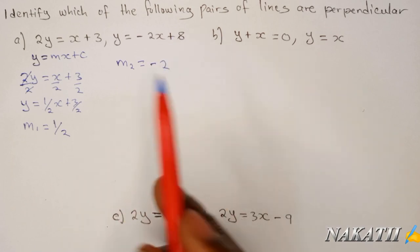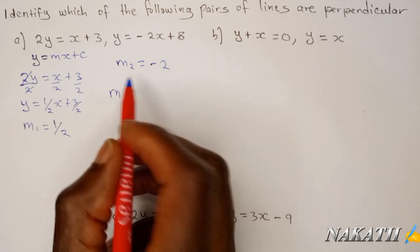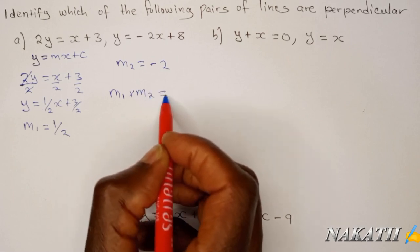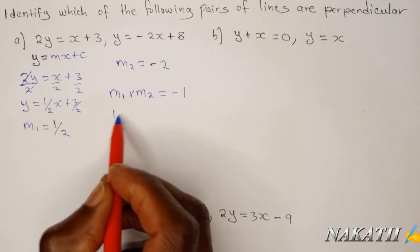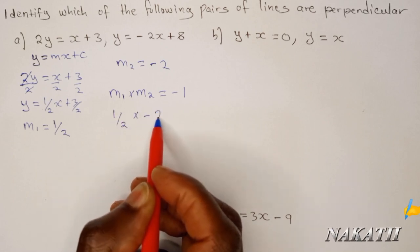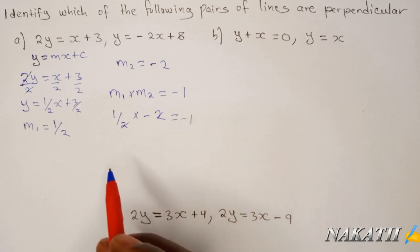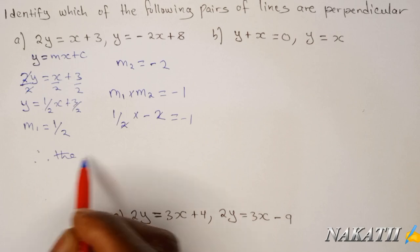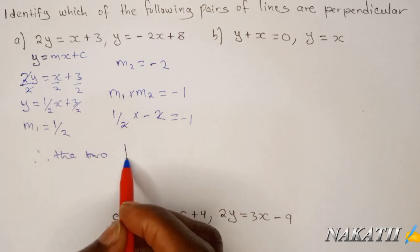When two lines are perpendicular, the product of their gradients M1 times M2 should equal negative one. In our case, we have (1/2) times (negative 2). If you simplify this, your answer is negative 1, and therefore the two equations are perpendicular.